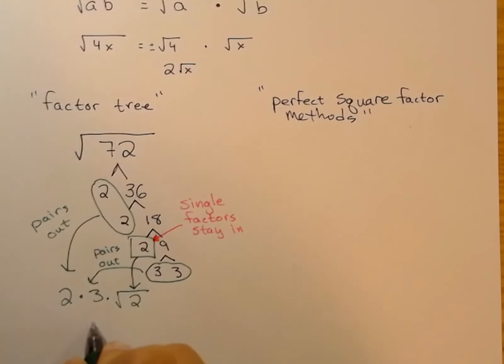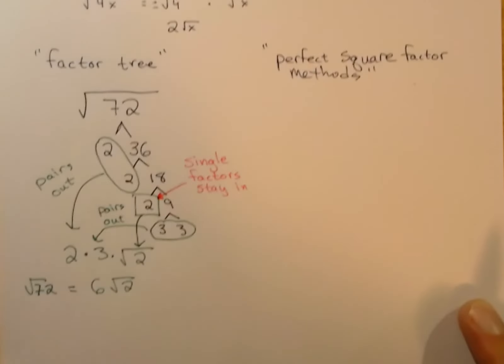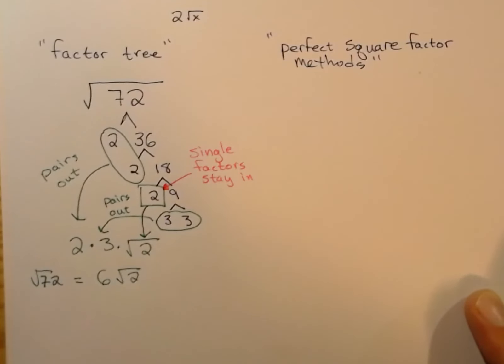Single factors stay in the radical. And then you re-multiply. Obviously 2 times 3 is just 6. So the square root of 72 is really equal to 6√2.